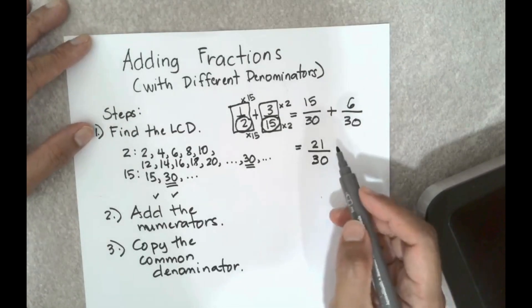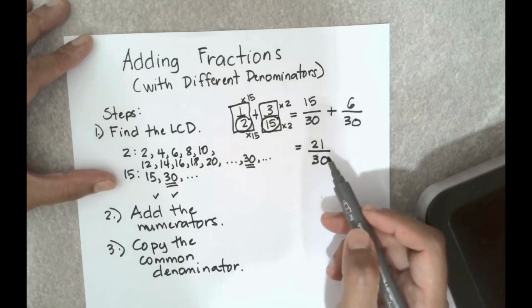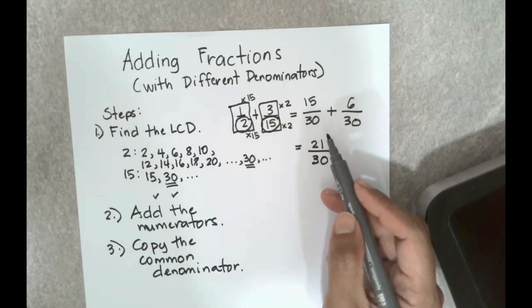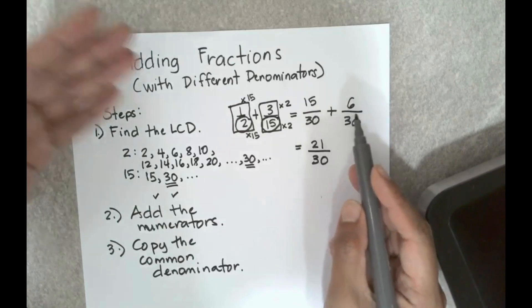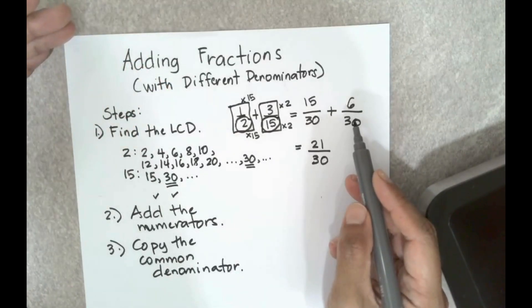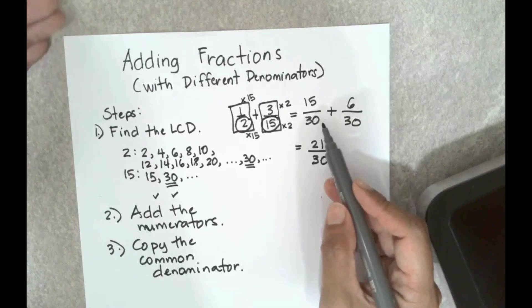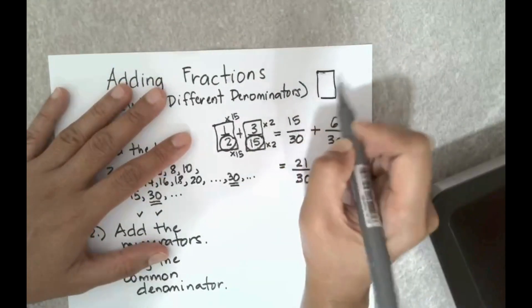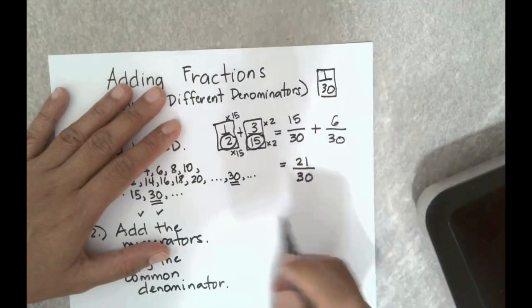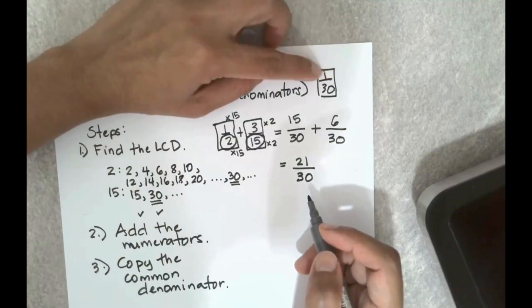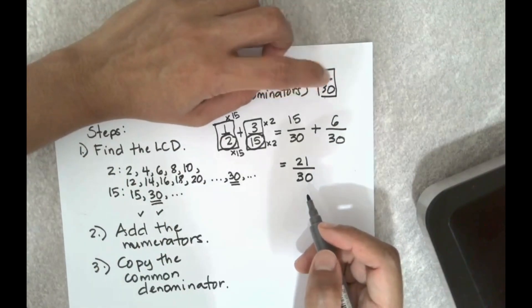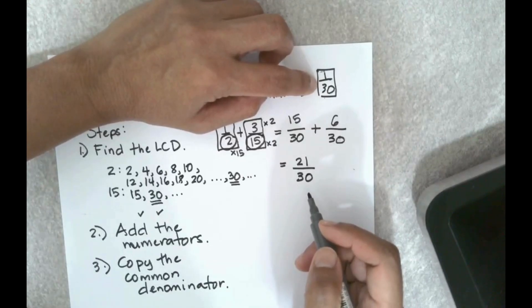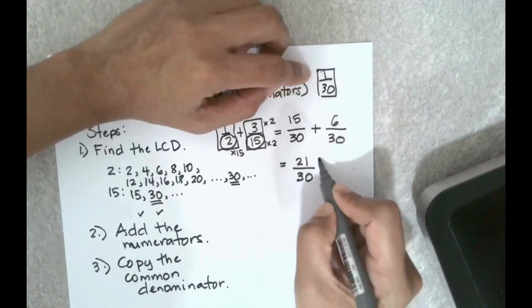Like I said in the previous video, the reasoning why we just simply add the numerators and copy the denominator is because 15/30 means you have 15 pieces of 1/30, and 6/30 means that you have 6 pieces of 1/30. So if you have 15 pieces of a tile, a fraction, a unit fraction of this size, you have 15 of that, and then you add 6 more of that, then how many of this unit fractions do you have? Well you have 21 pieces of this unit fraction, which means you have 21/30.